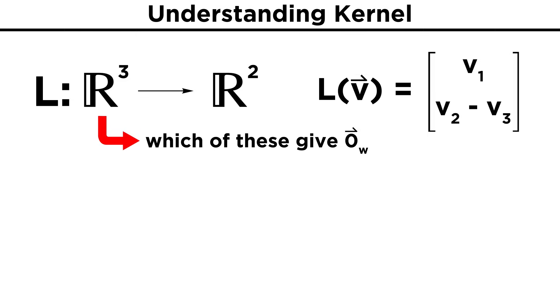we want to find which vectors in ℝ³ give zero W under this transformation. This just ends up boiling down to solving the equation L of V equals zero W, for possible values of V₁, V₂, and V₃.